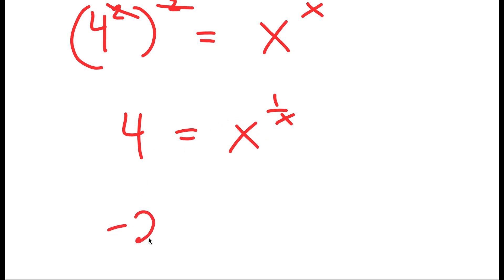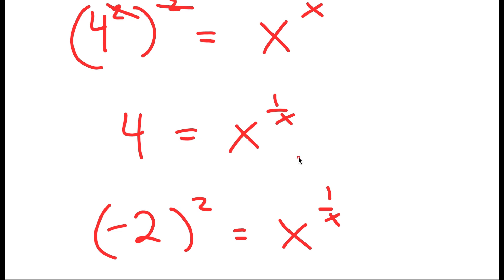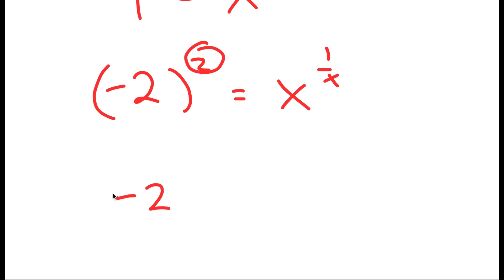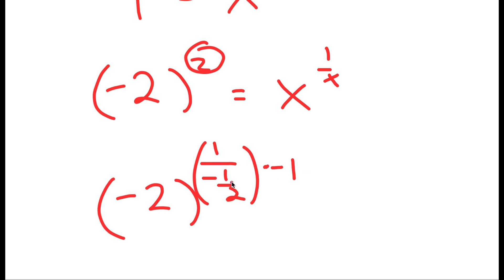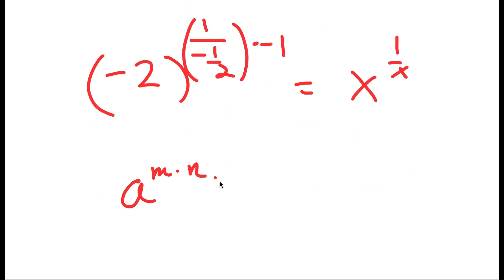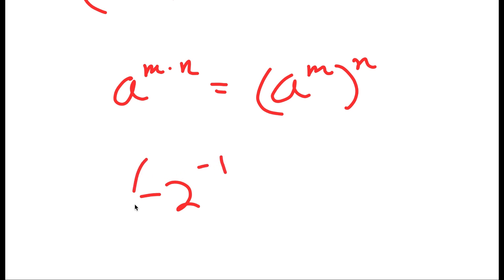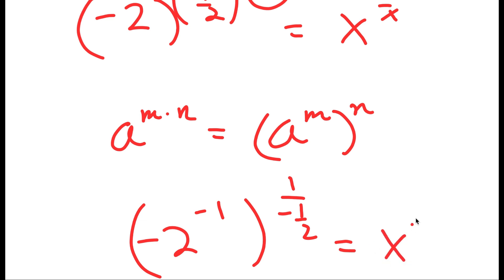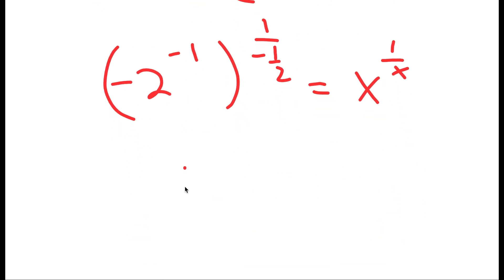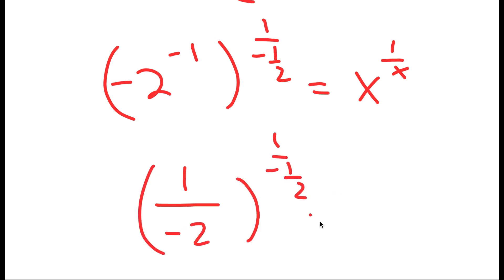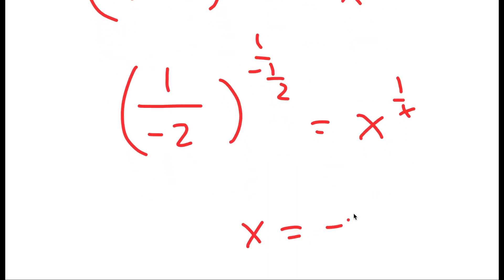Now, 4 is the same as negative 2 squared, and the exponent 2 can be rewritten as 1 over negative 1 half times negative 1. Using the property that a to the power of m times n equals a to the power of m to the power of n, the negative 1 becomes an exponent, giving negative 2 to the power of negative 1 to the power of 1 over negative 1 half, equal to x to the power of 1 over x. Since negative 2 to the power of negative 1 is negative 1 half, my solution is x equals negative 1 half.